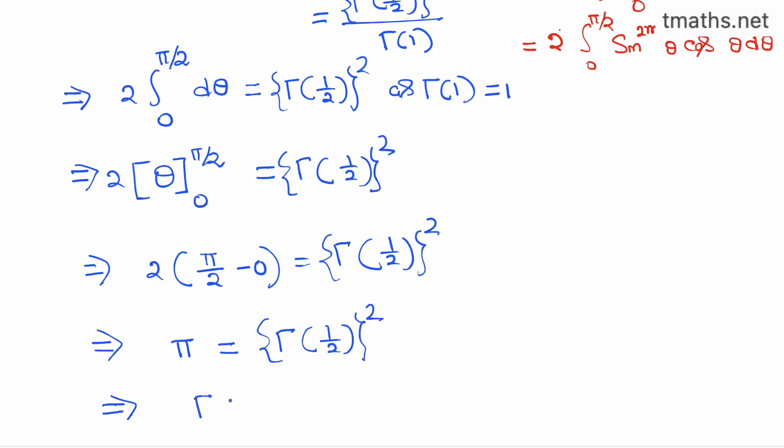From here, we deduce that gamma of half is equal to root π, taking the square root on both sides.